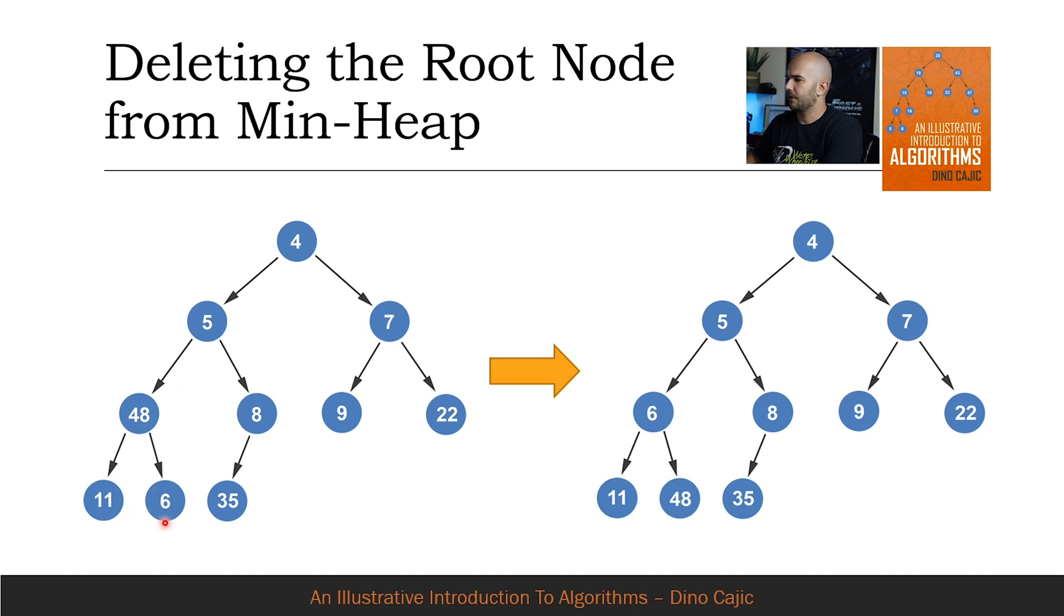Finally, 11 and 6 are compared. Node 6 is the smallest child, so it's compared to 48. Node 48 is larger, therefore the two nodes are swapped.